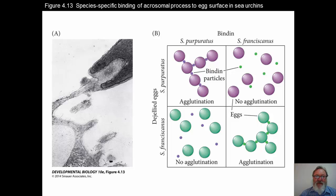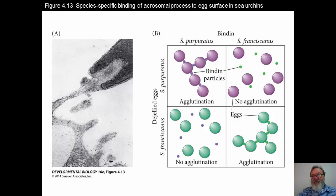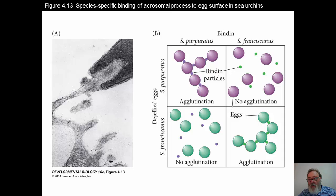Species-specific binding of the acrosomal process to the egg surface is illustrated by an experiment taking bindin particles from one species — Purpuratus — and mixing with eggs of the same species from which jelly coats have been removed. The bindin particles from that species will bind those eggs together, whereas bindin particles from another species will not. The opposite holds for Franciscanus — no agglutination takes place with mismatched species, but agglutination does take place when the same species' bindin particles and eggs are mixed, showing how sperm bind specifically to eggs of the same species.